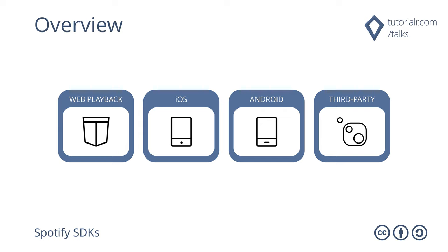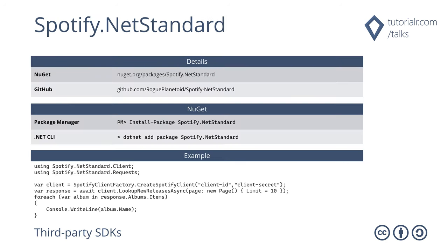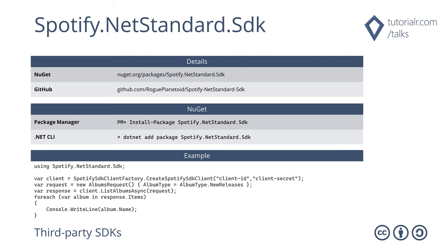Third-party SDKs are available for other platforms such as .NET and the Universal Windows platform, available on NuGet. Spotify.NET Standard covers the Spotify Web API and is available on NuGet, installable into any .NET Standard 2.0 compatible runtime including .NET Framework, .NET Core and .NET 5. Source code is available on GitHub including unit tests and documentation. Spotify.NET Standard.SDK wraps Spotify.NET Standard by adding support for commanding, rich data binding enhancements and more, making it even easier to build Spotify applications supporting .NET Standard 2.0 using Xamarin, WinUI and WPF, and is available on NuGet with documentation, unit tests and source code on GitHub.